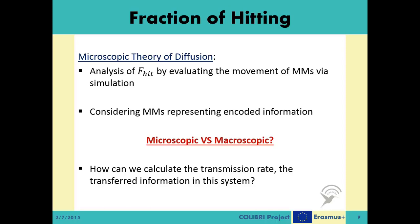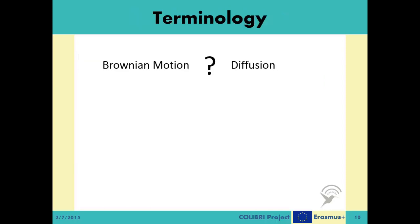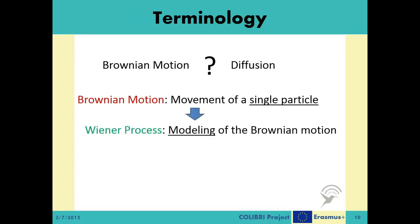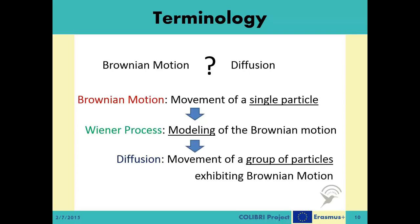In the next video, we will be covering this next step. It is often confusing between the terms Brownian motion and diffusion in this context. The movement of a single particle is called Brownian motion, which is modeled by the Wiener process, also known as standard Brownian motion. A group of particles, each exhibiting Brownian motion, constitutes a diffusion process.